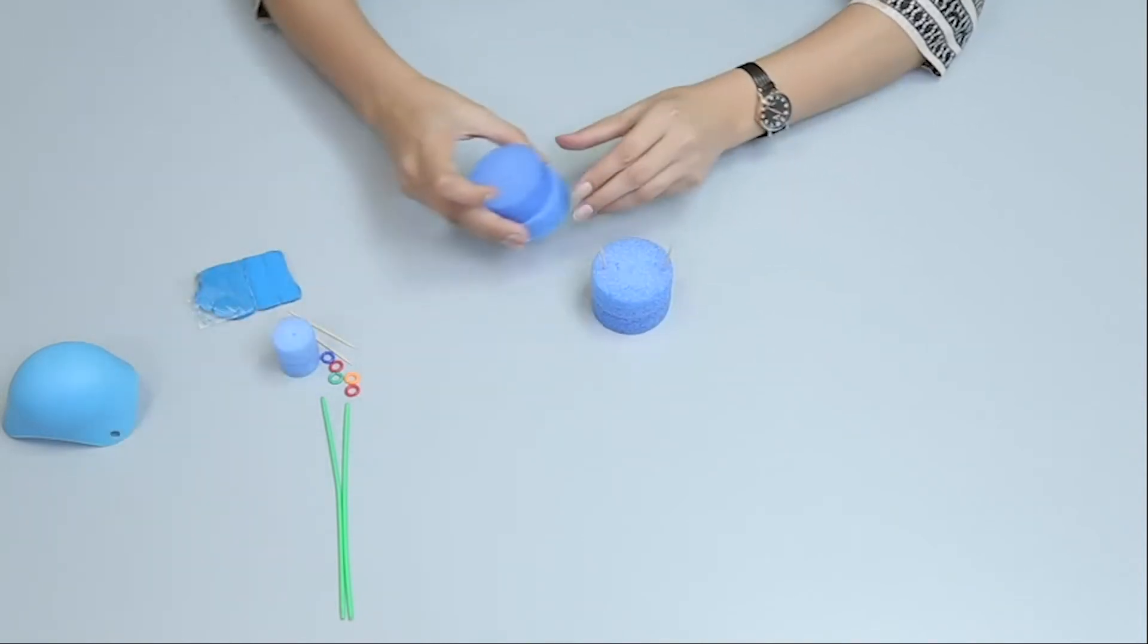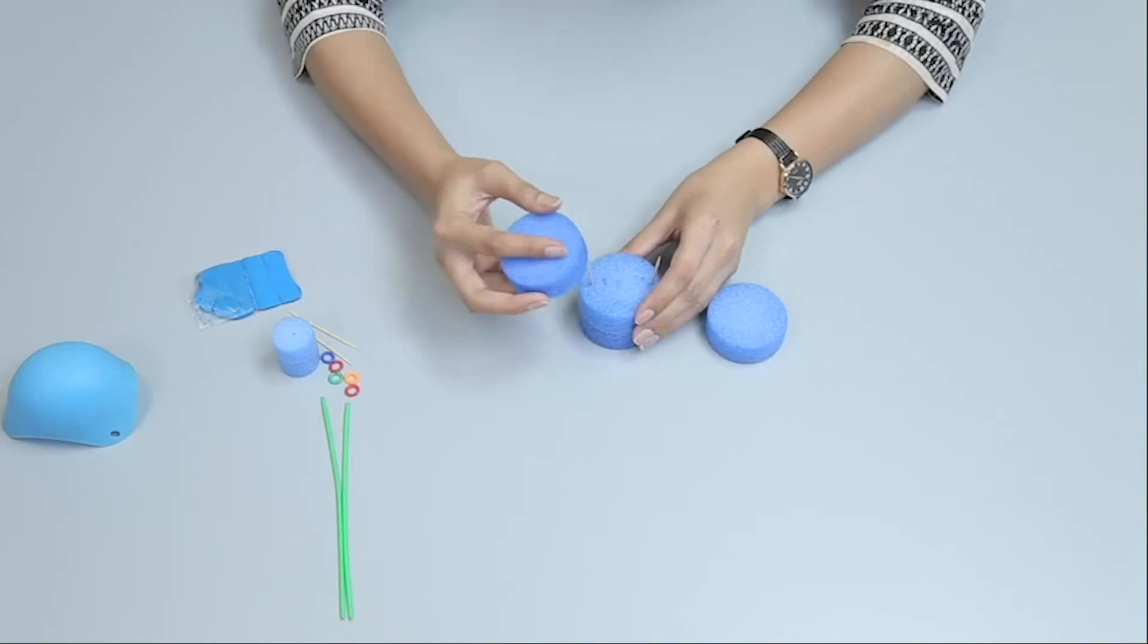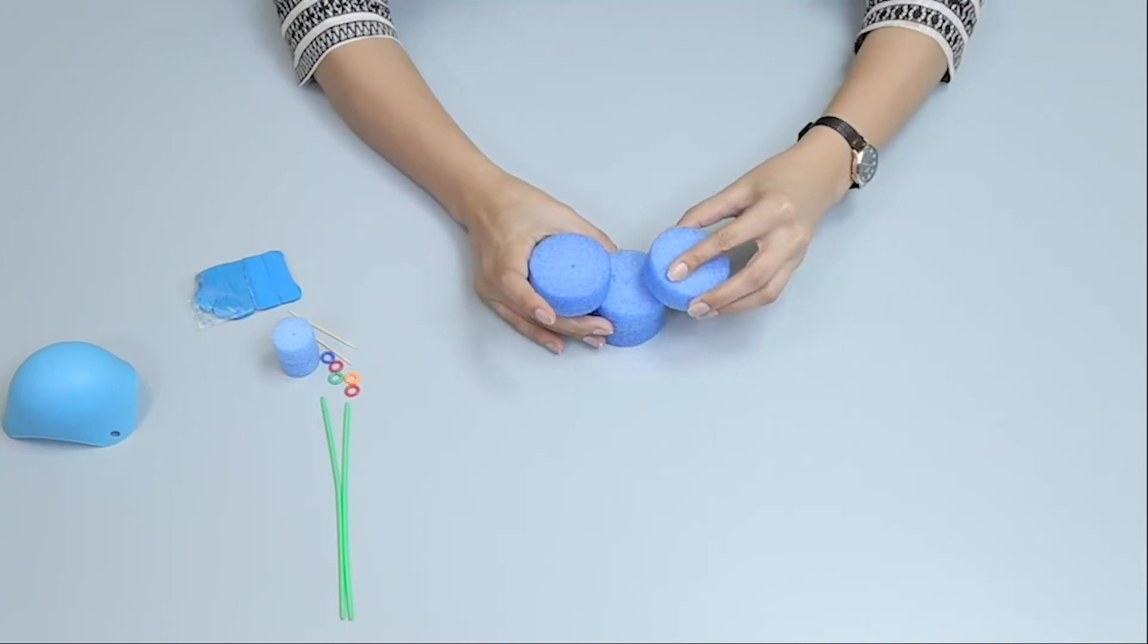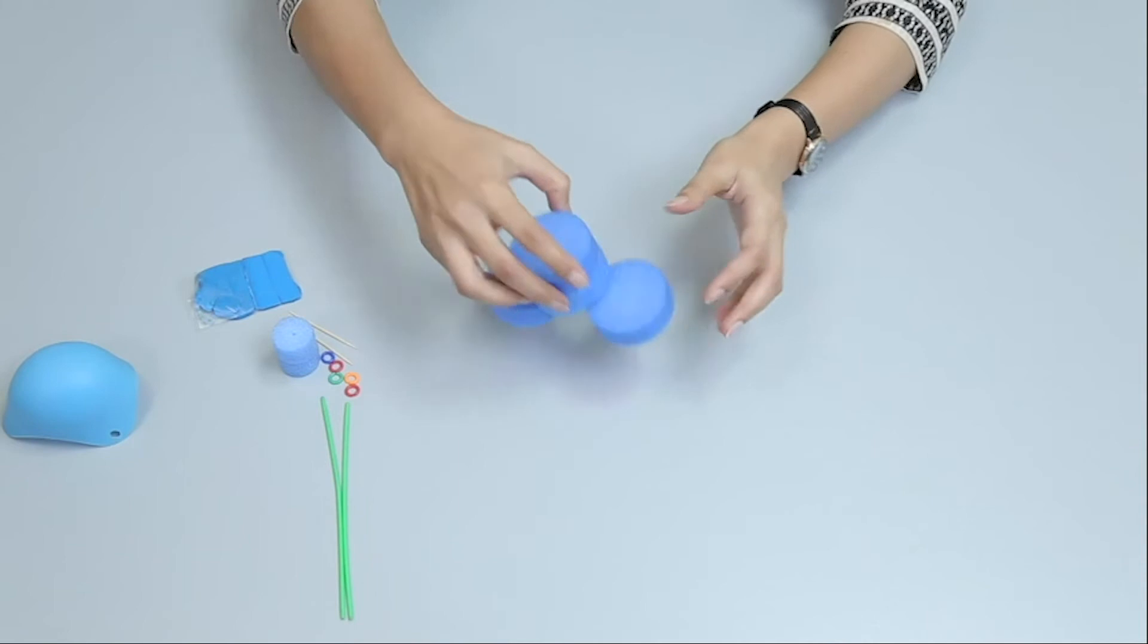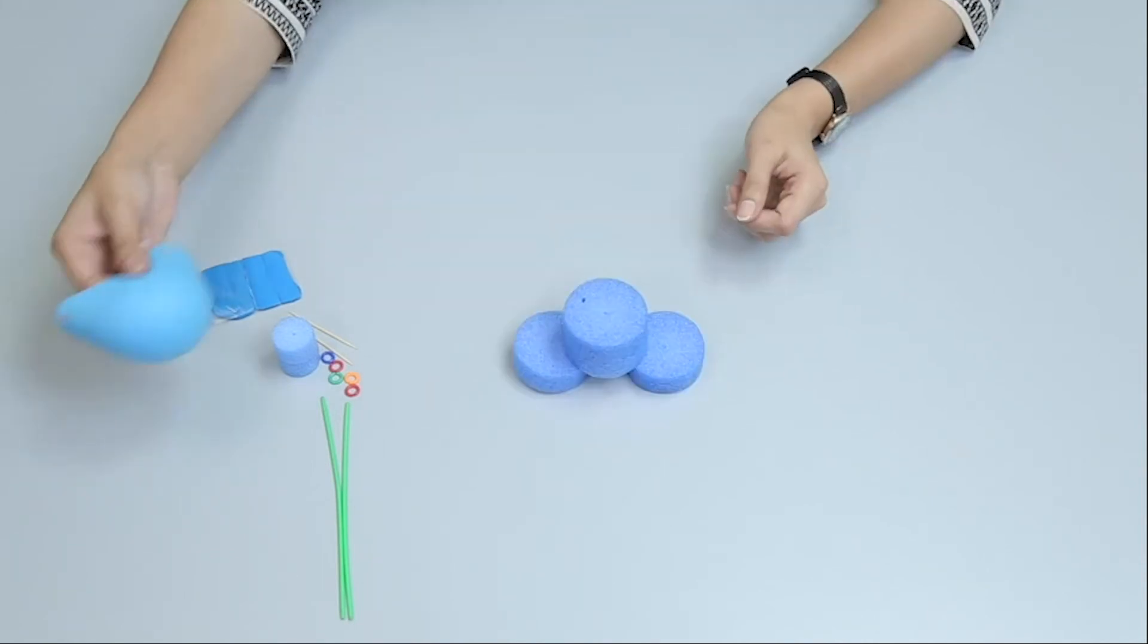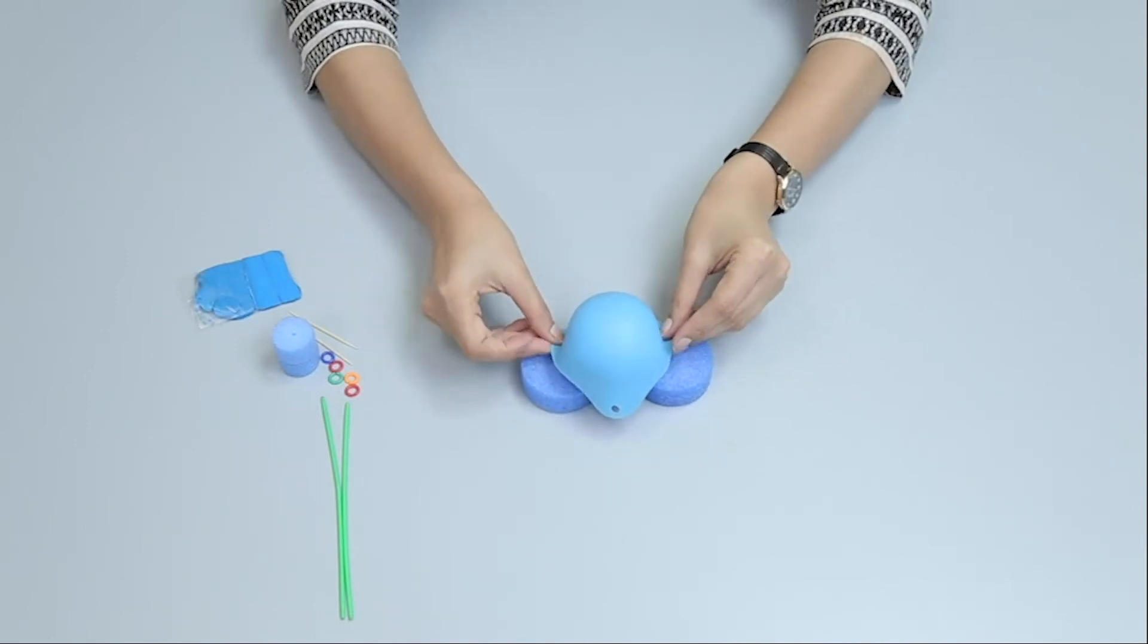Attach two foam circles for making the feet of the monster. Place the silicone egg poaching cup for making the head.